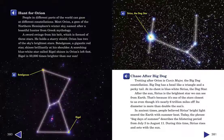In ancient times, people believed Sirius's bright light seared the Earth with summer heat. Today the phrase, Dog Days of Summer, describes the blistering period from July 3rd to August 11th. During this time, Sirius rises and sets with the sun.